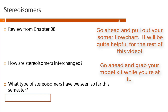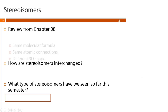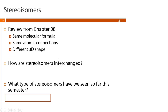Stereoisomers are very important when talking about carbohydrates. As a reminder from our first module, stereoisomers are molecules with the same molecular formula, same atomic connections, but different three-dimensional shapes. They can only be interchanged by breaking bonds. Go ahead and pause and tell me what subset of stereoisomers we've already covered so far this semester.